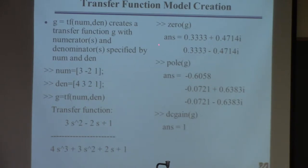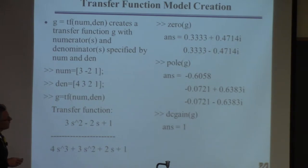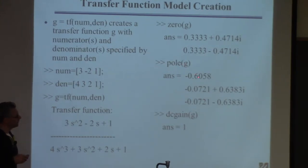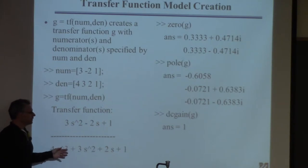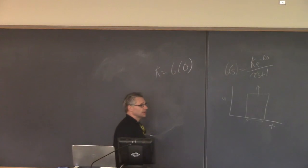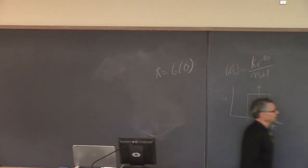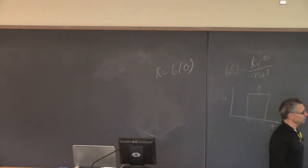Once you have a transfer function, you can issue 'zero(G)' to get the zeros — in this example, two zeros as a complex conjugate pair. You can issue 'pole(G)' to get the poles — for this third-order denominator, there are three poles, all with negative real parts, with one complex conjugate pair, so the system will be oscillatory. Because a zero has a positive real part, the system might exhibit an inverse response. You can also calculate the DC gain; evaluating a transfer function at s=0 gives the steady-state gain.